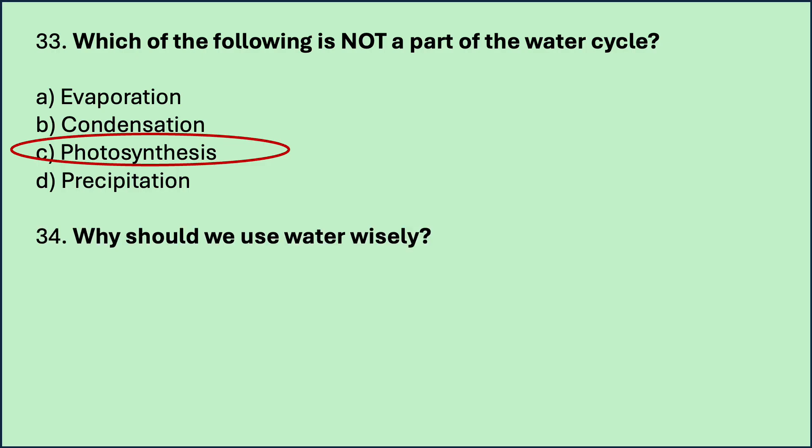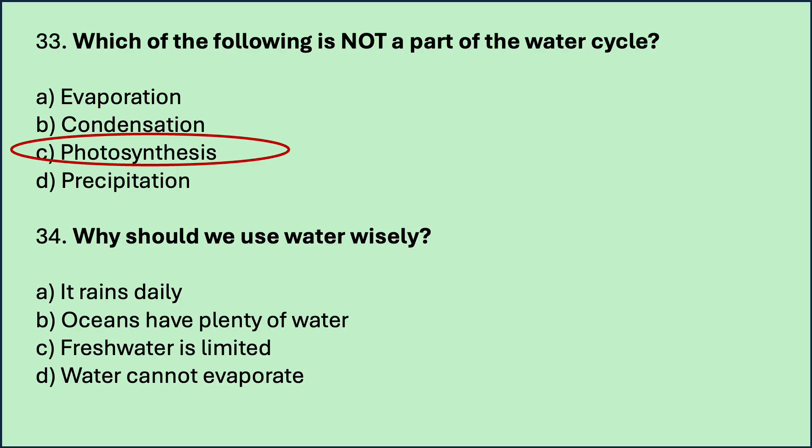Why should we use water wisely? Options are: it rains daily; oceans have plenty of water; freshwater is limited; water cannot evaporate. Which is the correct answer? Freshwater is limited — so we should use water wisely.